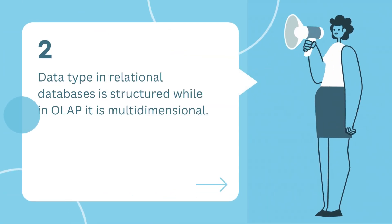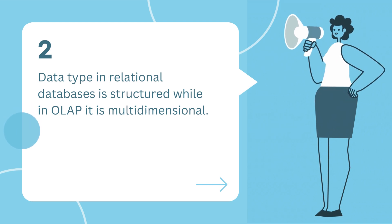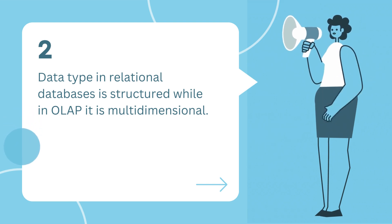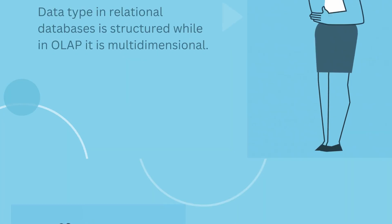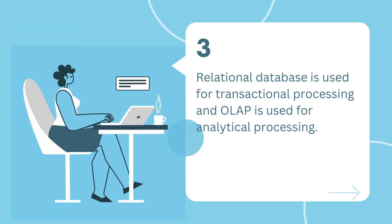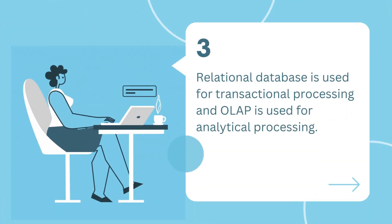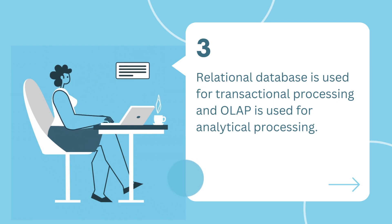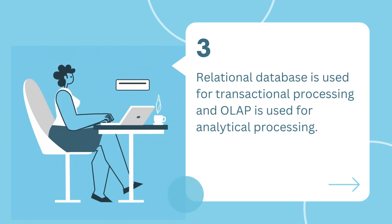Number two: data type in relational databases is structured, while in OLAP it is multidimensional. Number three: relational database is used for transactional processing, and OLAP is used for analytical processing.